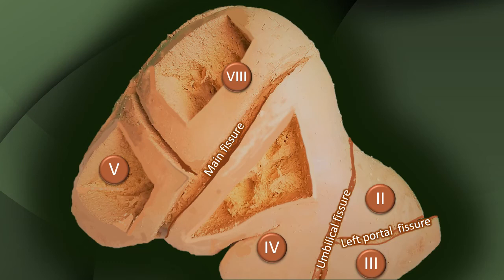The umbilical fissure further helps us classify the whole area to the left. The left portal fissure divides that area further into segment 2 and segment 3. So, to summarize: segments 5 and 8 are to the right of the main fissure; immediately to the left of the main fissure is segment 4; and further to the left are segments 2 and 3.